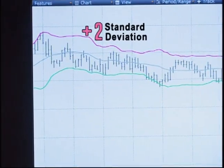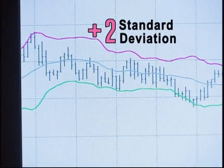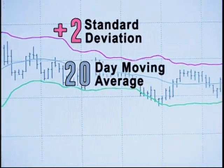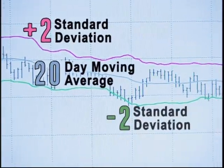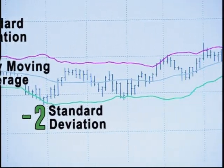Bollinger Bands have volatility effectively embedded into their formula. The study calculates a simple moving average and then measures two standard deviations above and below that average. The pink line is the plus two standard deviation Bollinger Band, the gray line is the 20-day moving average, and the green line is the negative two standard deviation line.